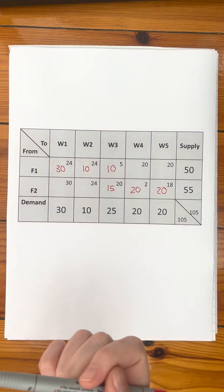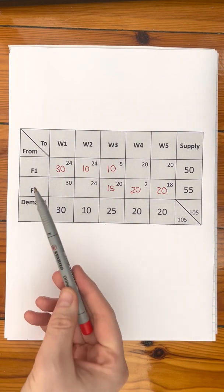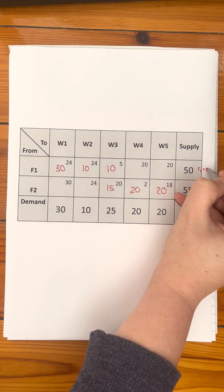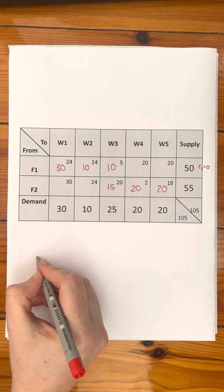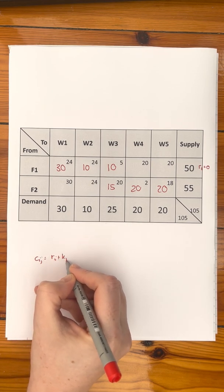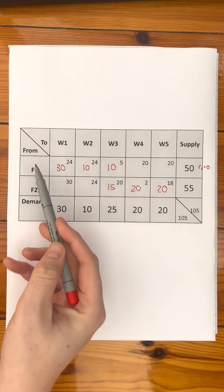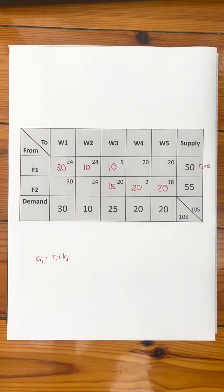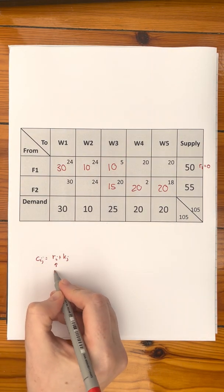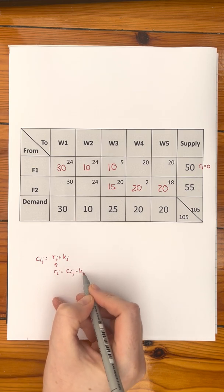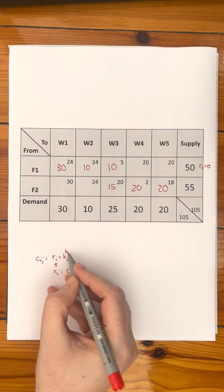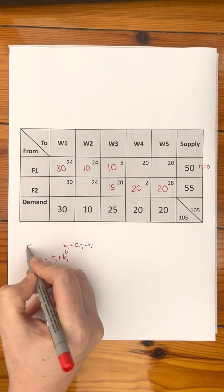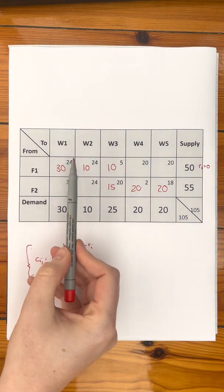With Modi's method, the first thing we have to do is find the row and column values using the cost coefficients and an assumption for one row value. In this course, we always choose R1 equal to zero. The formula we're using is Cij equals Ri plus Kj, where I is the row number (1 and 2) and J is the column number (1 through 5). We can rearrange to make Ri the subject: Ri equals Cij minus Kj, or make Kj the subject: Kj equals Cij minus Ri.